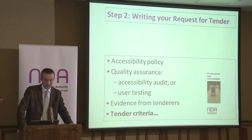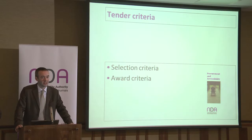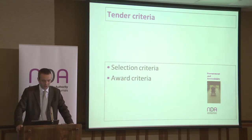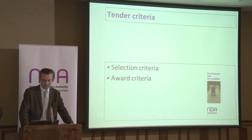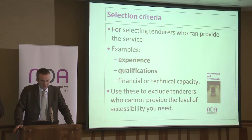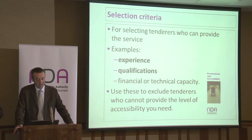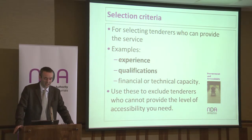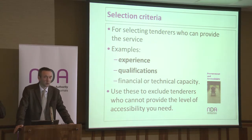Tender criteria are the real meat of most requests for tender. There are two types: selection criteria and award criteria — these are set in stone in law, mostly European law, and they're used for different things. Selection criteria are for selecting tenderers who can provide the service — or, more harshly, excluding people who can't. You want to exclude people who haven't proven they can give you something properly accessible. The type of thing you look for includes experience, qualifications, and financial capacity.